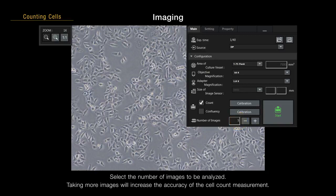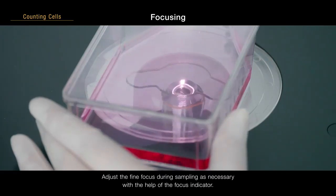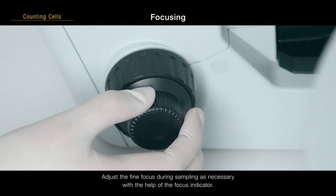Select the number of images to be analyzed. Taking more images will increase the accuracy of the cell count measurement. Adjust the fine focus during sampling as necessary, with the help of the focus indicator.